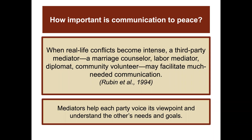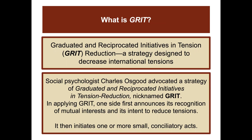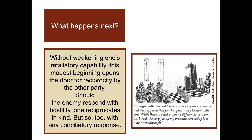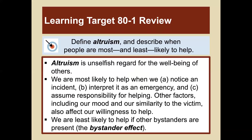When real-life conflicts become intense, a third-party mediator — a marriage counselor, labor mediator, diplomat, or community volunteer — may facilitate much-needed communication. Mediators help each party voice its own viewpoint and understand the other's needs and goals. GRIT stands for Graduated and Reciprocated Initiatives in Tension Reduction, a strategy designed to decrease international tensions. Social psychologist Charles Osgood advocated GRIT: one side first announces its recognition of mutual interests and its intent to reduce tensions, then initiates one or more small conciliatory acts. Without weakening one's retaliatory capability, this modest beginning opens the door for reciprocity by the other party. Should the enemy respond with hostility, one reciprocates in kind, but so too with any conciliatory response.